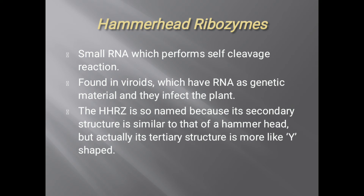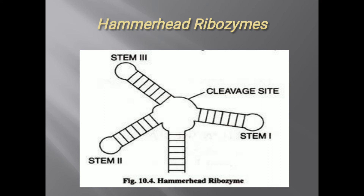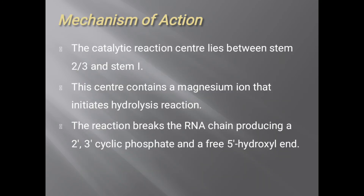The third type is the hammerhead ribozyme. Small RNAs which perform self-cleavage reactions are known as hammerhead ribozymes. They are found in viroids, which have RNA as genetic material and infect plants. The hammerhead ribozyme is so named because its secondary structure resembles a hammerhead, though its tertiary structure is more Y-shaped. There are three stems — stem 1, stem 2, and stem 3 — and a cleavage site. The catalytic reaction center lies between stems 2/3 and stem 1, containing a magnesium ion that initiates hydrolysis. The reaction breaks the RNA chain, producing a 2',3'-cyclic phosphate and a free 5' hydroxyl end.